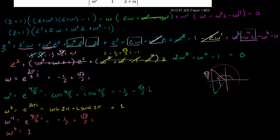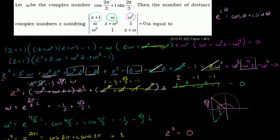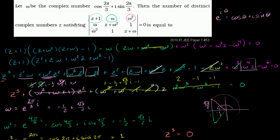Finally the constant terms: 2ω³ − ω⁶ − 1 = 2(1) − 1 − 1 = 0. So the entire determinant equation simplifies to z³ = 0. The only number — real or complex — satisfying z³ = 0 is z = 0. Since they ask for the number of distinct complex numbers z, the answer is 1.